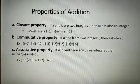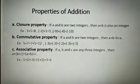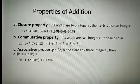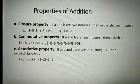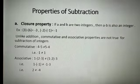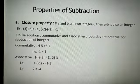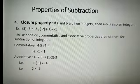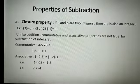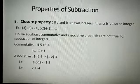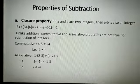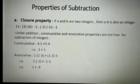And one more thing: properties of addition — that is closure property, commutative property and associative property — and properties of subtraction. In that, we have seen the closure property. Only the closure property holds in subtraction, and the commutative property and associative property do not hold for subtraction.